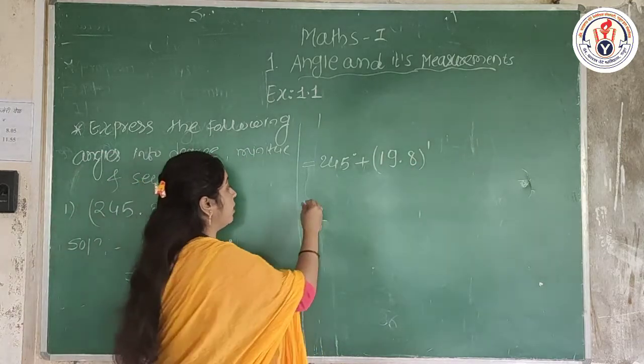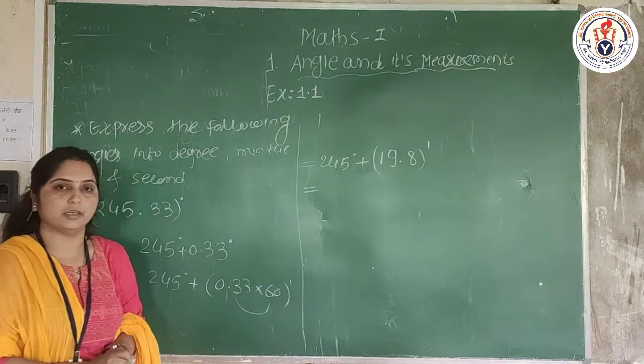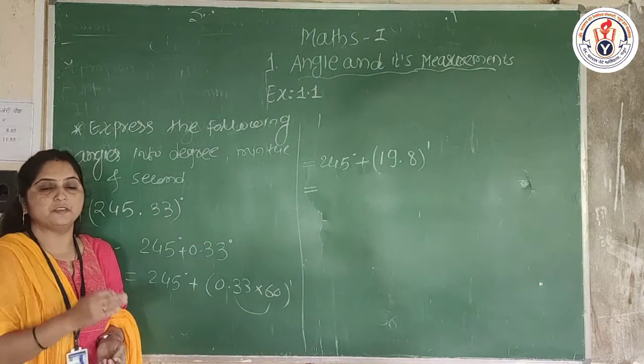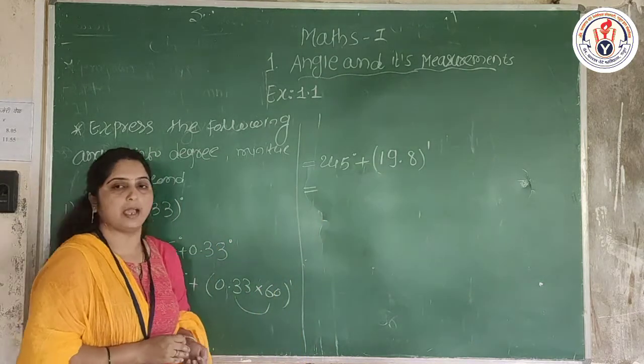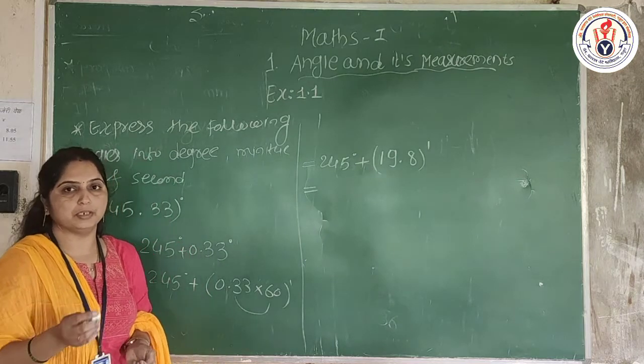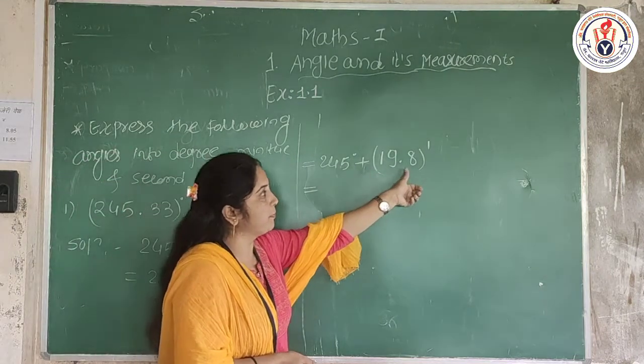Then again we have to convert seconds. We split 19.8 minutes into 19 minutes plus 0.8 minutes, and then convert the 0.8 minutes into seconds by multiplying it by 60.